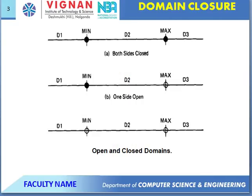In this one-dimensional domain with both sides closure — D1, D2, D3 — these are single-dimensional domains. One is minimum closure and maximum closure: both sides are closed. The next case is one side open, another side closed.